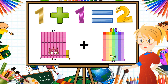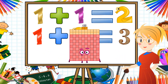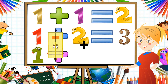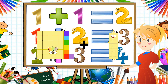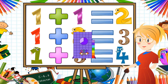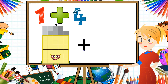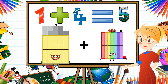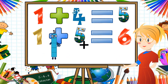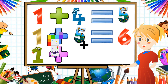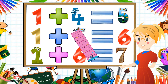83 plus 31 equals 114. 37 plus 30 equals 67. 31 plus 37 equals 68. 37 plus 68 equals 105.